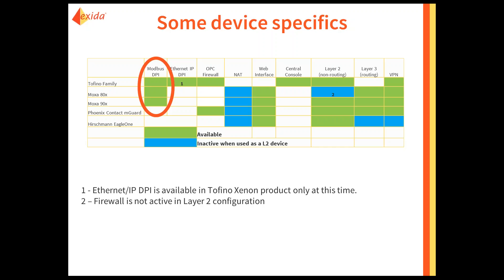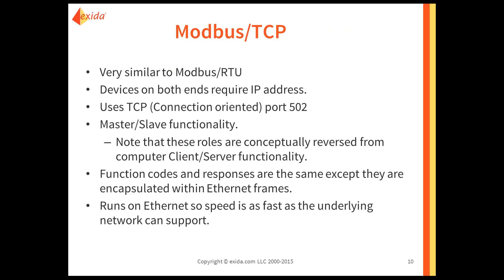Modbus TCP in general is very similar to the older Modbus RTU, which is still found very frequently in industrial control systems. Devices on both ends require an IP address. It uses TCP, which is a connection-oriented connection on the Ethernet wire.